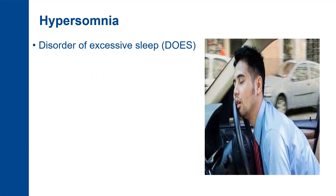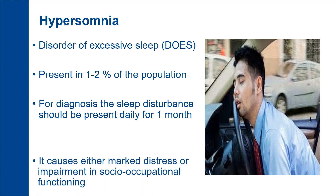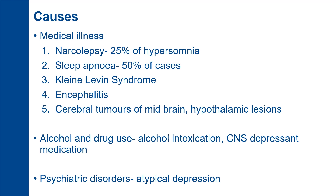Hypersomnias are disorders of excessive sleep, present in 1 to 2 percent of the population. For diagnosis, the sleep disturbance should be present daily for one month and cause marked distress or impairment in socio-occupational functioning. Causes include medical illness, narcolepsy (comprising 25 percent of cases), sleep apnea (50 percent of cases), Kleine-Levin syndrome, encephalitis, cerebral tumors, midbrain and hypothalamic lesions, alcohol and drug abuse, CNS-depressant medications like benzodiazepine overdose, and psychiatric disorders like atypical depression.